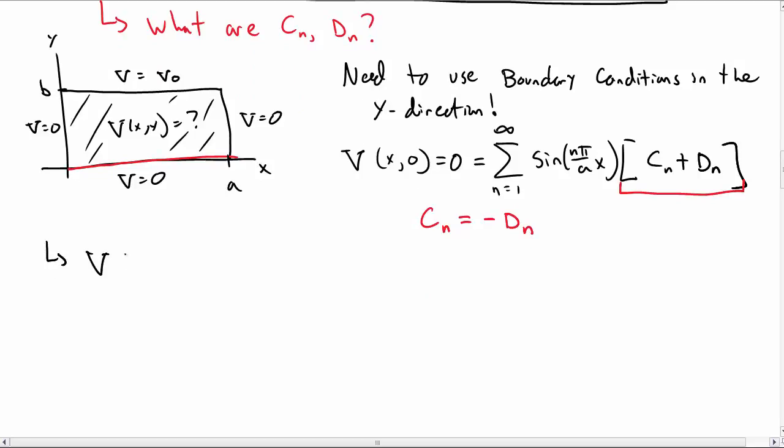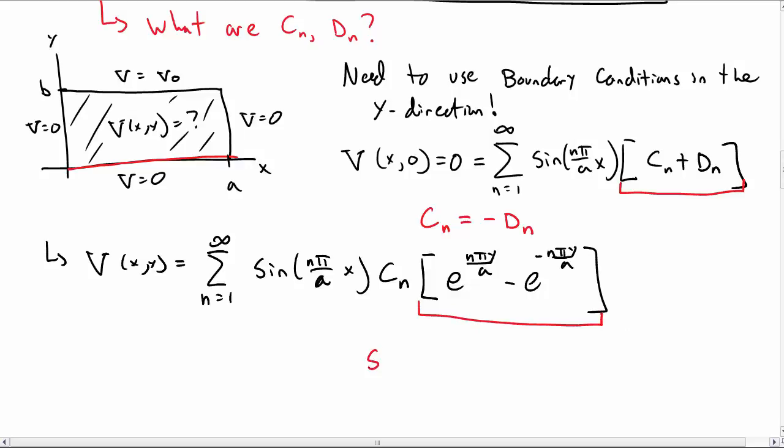So then we can rewrite our general solution, which is not quite so general anymore. V(x,y) is sum from n equal 1 to infinity sin(n pi over a x). Pull out C_n and then I have e to the n pi y over a minus e to the minus n pi y over a.